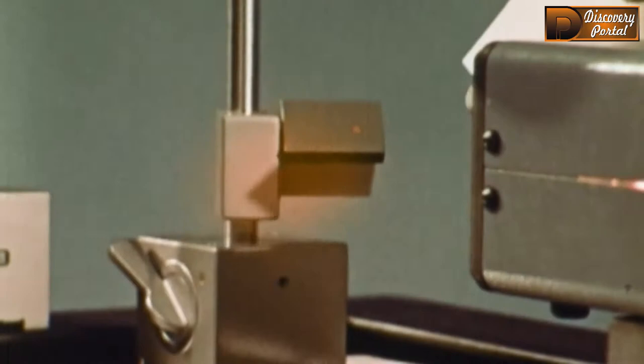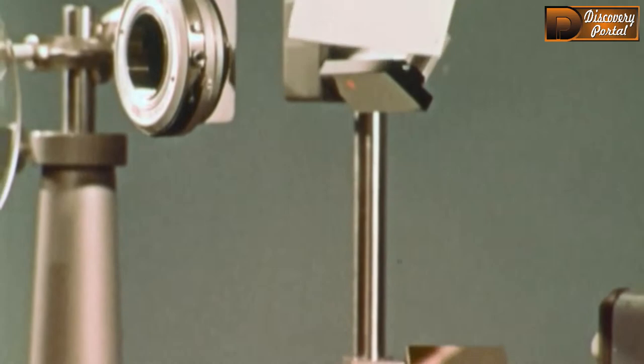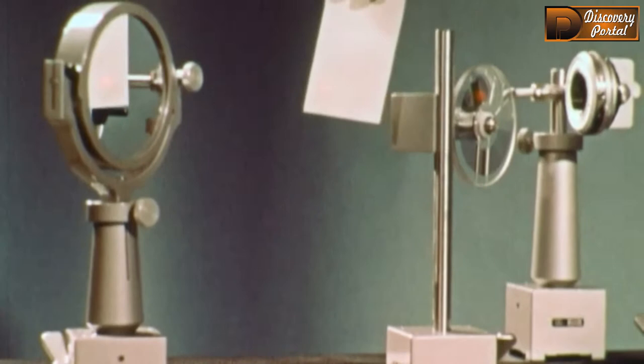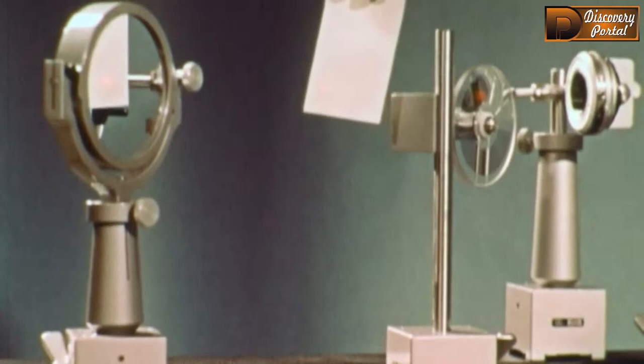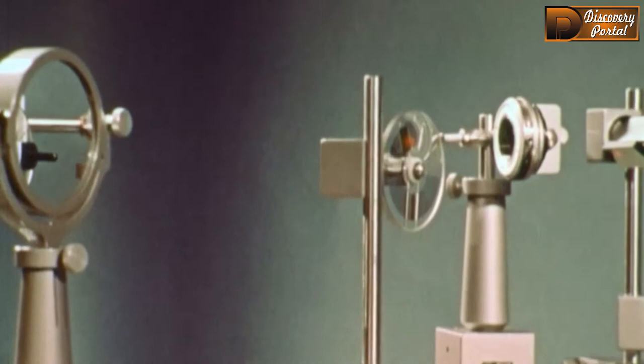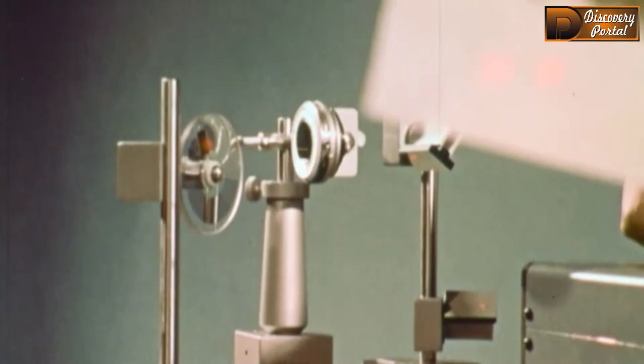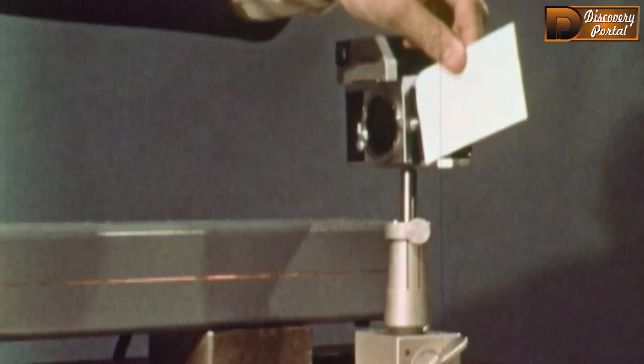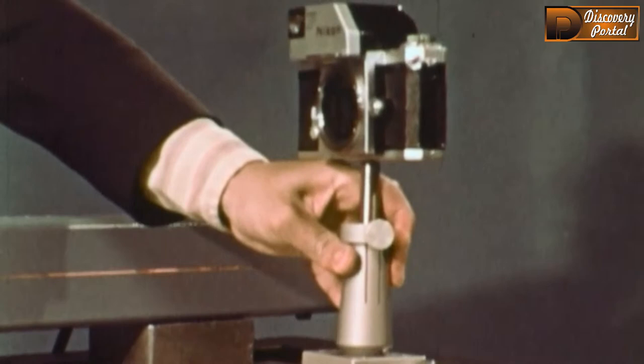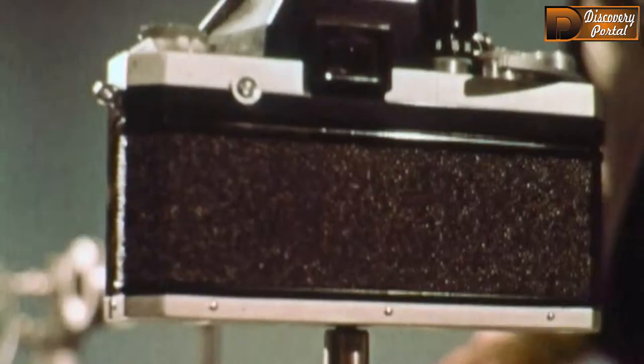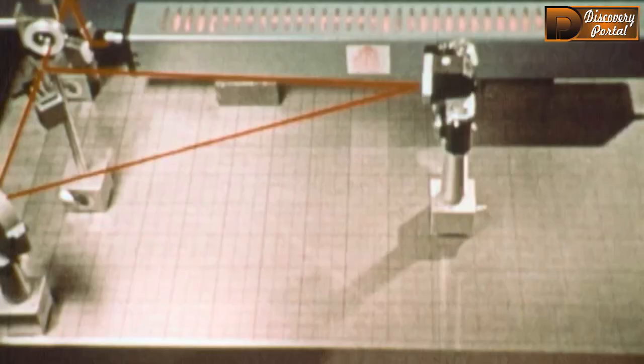Here is another demonstration using laser light. A partially silvered mirror allows half of the light to pass through while the rest is reflected. Where the two beams of light cross, we will place a film. Notice the camera has no lens. It is simply a film holder. This will be the path of the light.